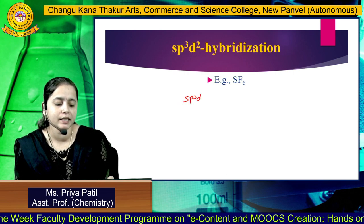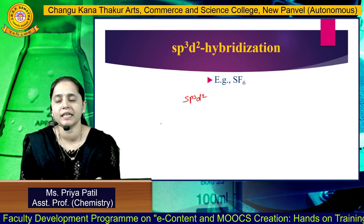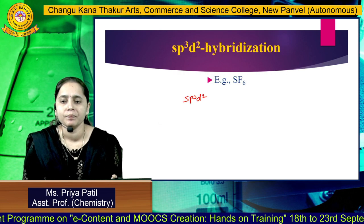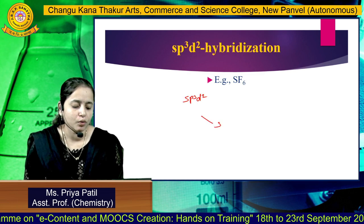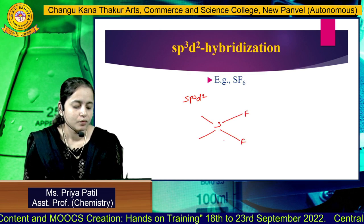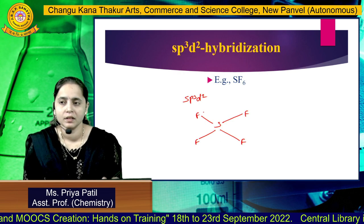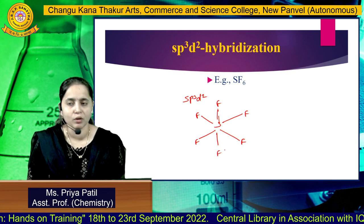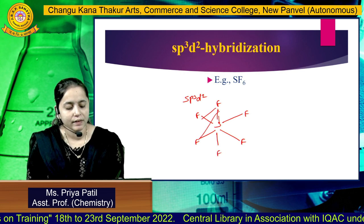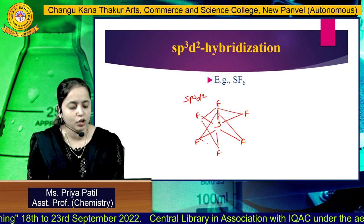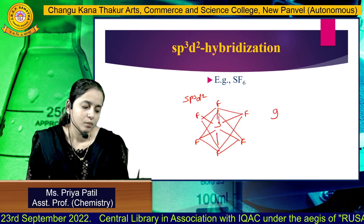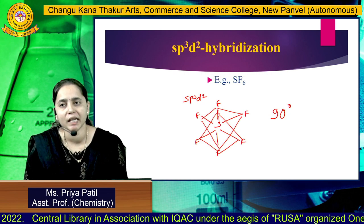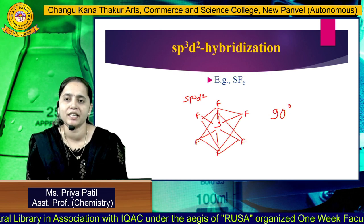This gives SP3D2 hybridization. The shape of this molecule is octahedral. Four fluorine atoms are in the plane and 2 fluorine atoms are above and below the plane, showing octahedral geometry with a bond angle of 90 degrees. This is all about hybridization and the types of hybridization. Thank you.